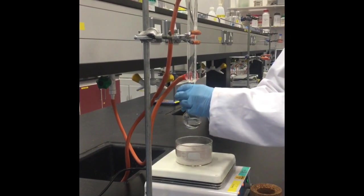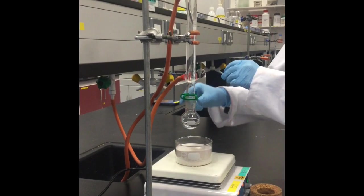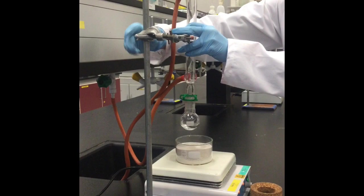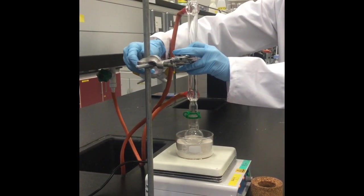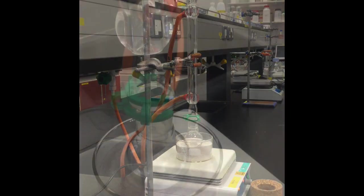Move the hot plate stirrer and sand bath into place and connect the round bottom flask onto the bottom of the condenser using a green clip. Carefully lower the clamp on the retort stand so the bottom of the round bottom flask is touching the sand.